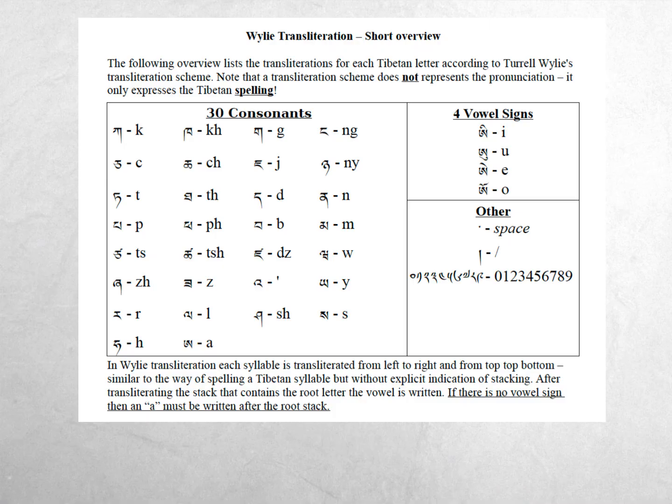You have access to this handout. This is the top of the handout, and on the next slide you'll see what comes below with some examples. This shows you the correspondences: the 30 consonants and four vowel signs that you use when typing or writing Tibetan in Wylie. A transliteration scheme, remember, is not about pronunciation. It only expresses the Tibetan spelling. This is a way to accurately represent, using Latin letters, the spelling of a Tibetan word, not the pronunciation.